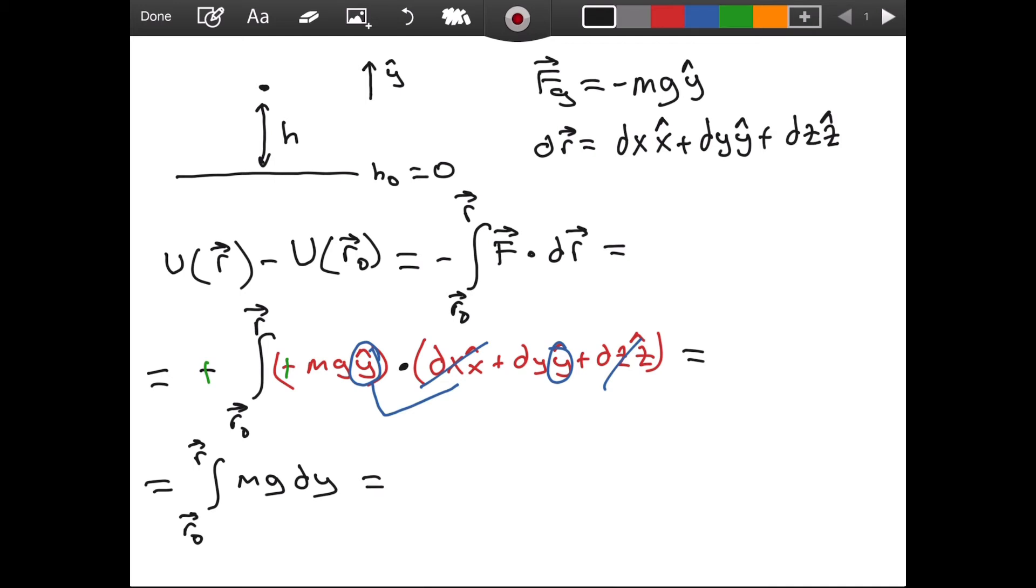And we are taking this integral. Now, I want to mention here that mg is a constant. So we can take it out of the integral. This is the, of course, case for very small distances from the Earth. Otherwise, the force of gravity would change with distance. But right now, we are neglecting that change to get the special case of our general gravitational potential energy formula.